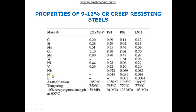Vanadium, niobium, nitrogen, and boron have been added to P91, P92, and E911. The austenitization temperature, tempering temperature, and 100,000-hour creep rupture strength at 600°C are also compared. The highest creep rupture strength is P92 at 120 MPa, followed by E911, then P91 at 94 MPa, and 12CrMoV at 59 MPa.